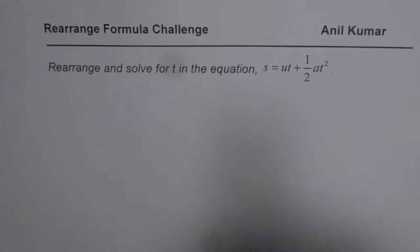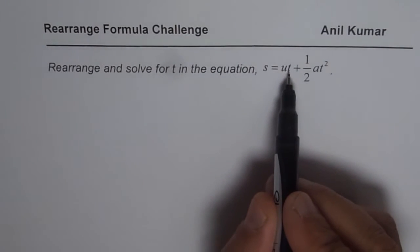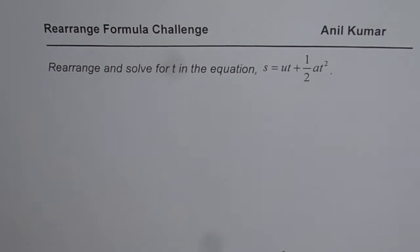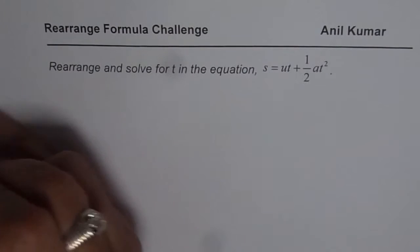Now when you have t in two different terms as given here, it is very difficult to isolate t. Some students who have learned the completing the squares method can do it very easily. We will actually follow that method and solve for t. So that's how we begin.